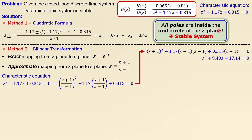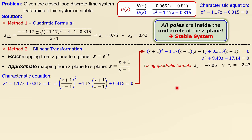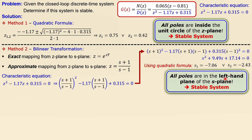The s-domain polynomial differs from the z-domain one, but we only care about stability, not the exact pole locations. Applying the quadratic formula to s² + 9.49s + 17.14 = 0 gives two solutions. For the s-plane, stability requires all poles to be in the left half plane. Both solutions satisfy this condition, so the system is stable.